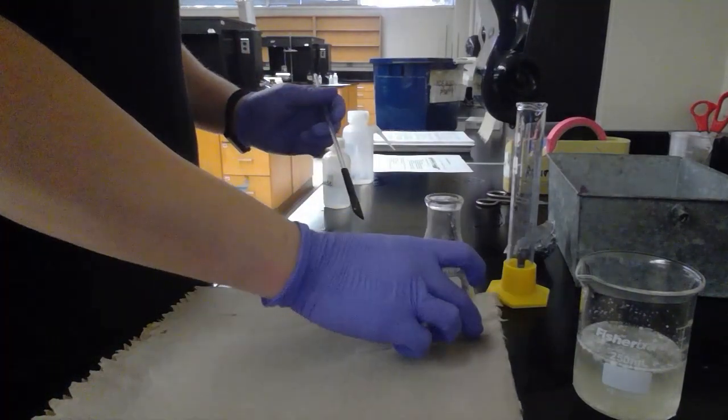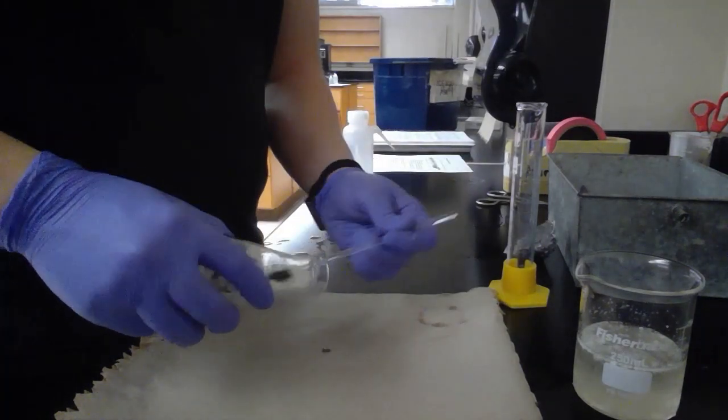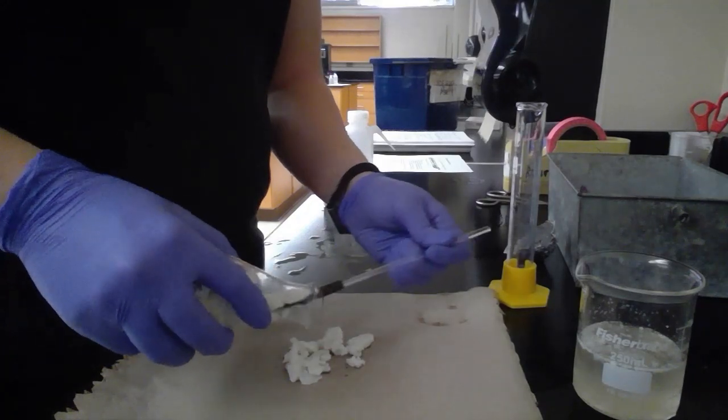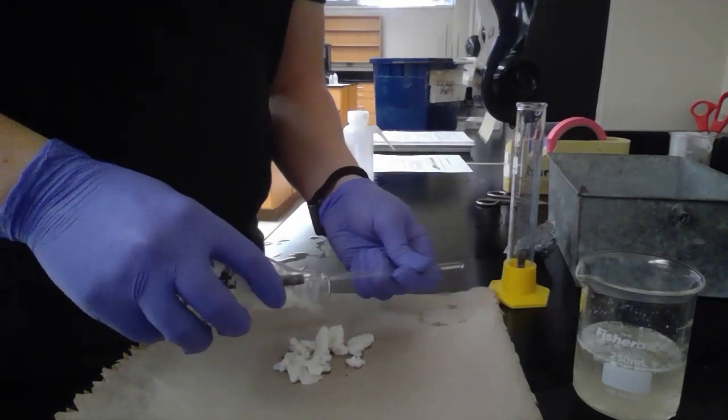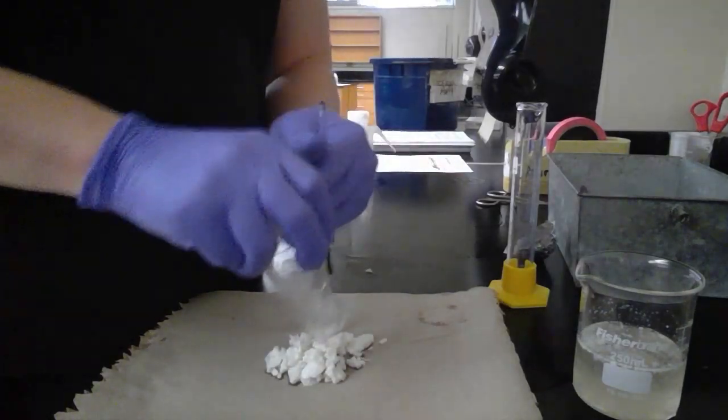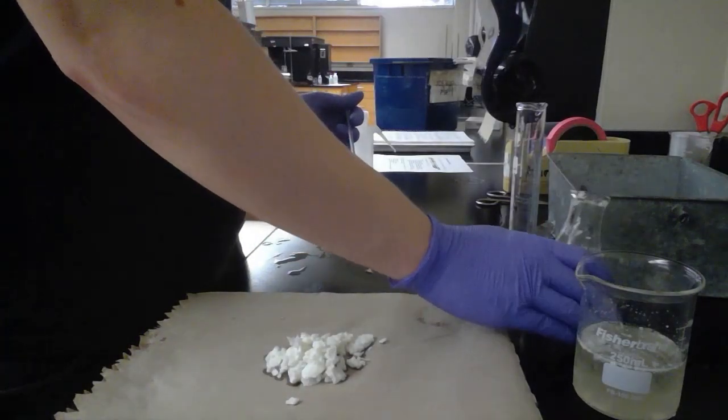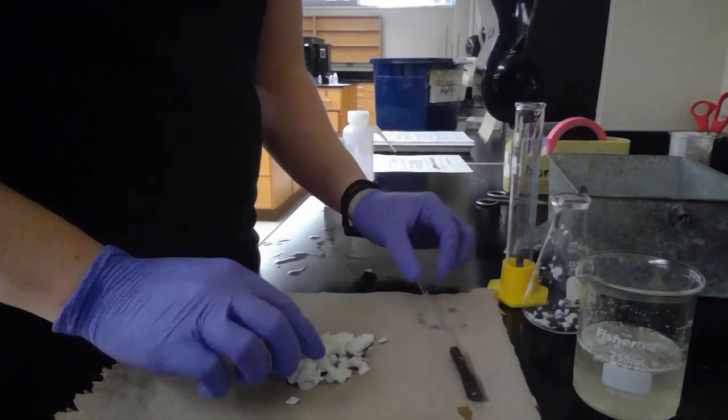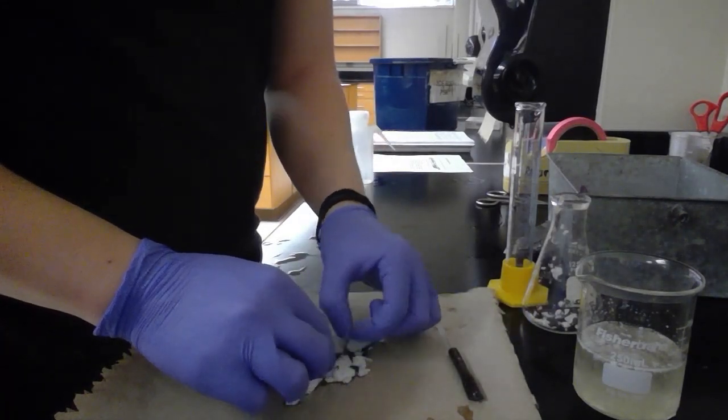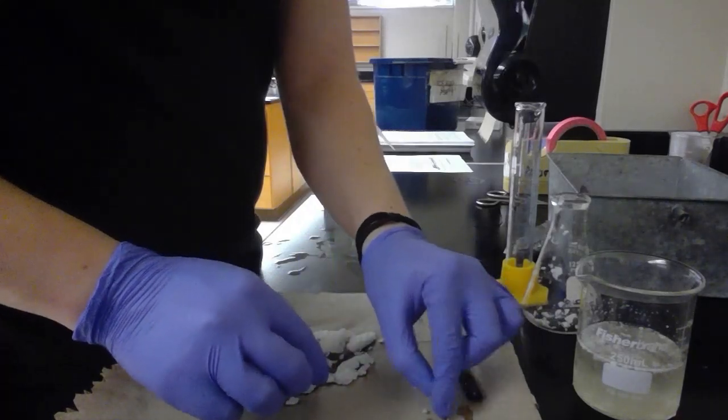Now we're going to transfer the soap from the flask onto a paper towel and dry it out. We're removing the boiling chips so they don't add into the mass when we weigh it later.